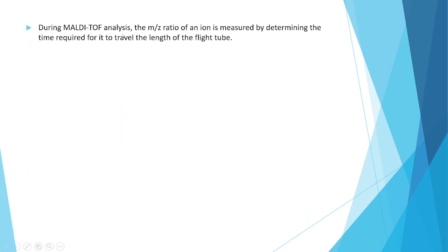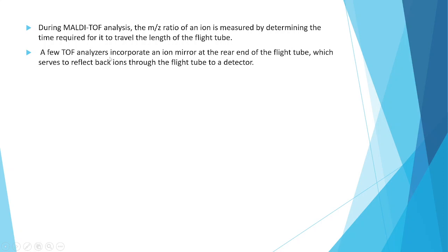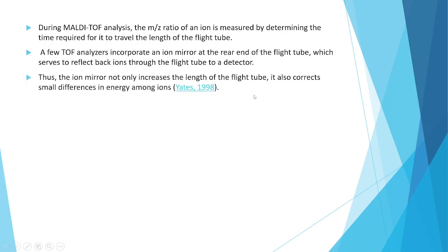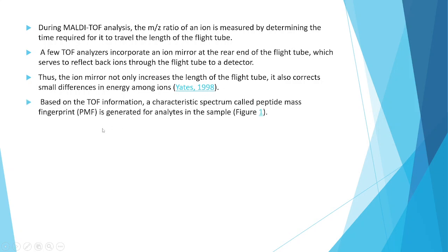During MALDI-TOF analysis, the m/z ratio of an ion is measured by determining the time required for it to travel the length of the flight tube. Some TOF analyzers incorporate an ion mirror at the rear end of the flight tube which serves to reflect back ions through the flight tube to the detector. The ion mirror not only increases the effective length of the flight tube but also corrects small differences in energy among ions, as described in 1998.